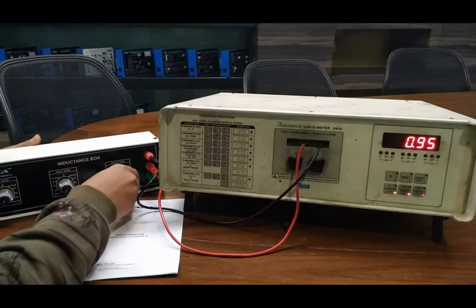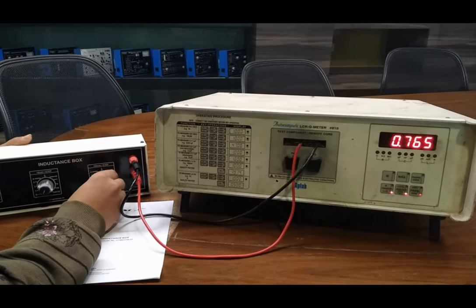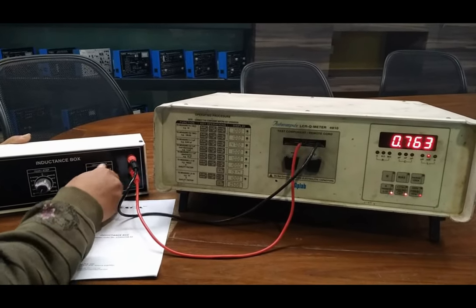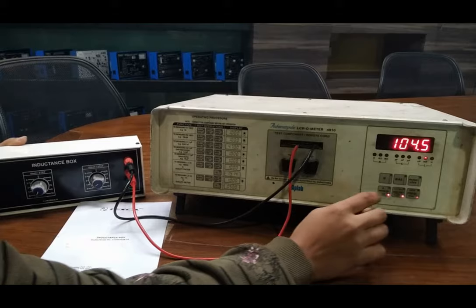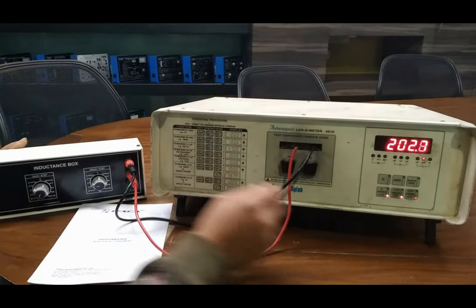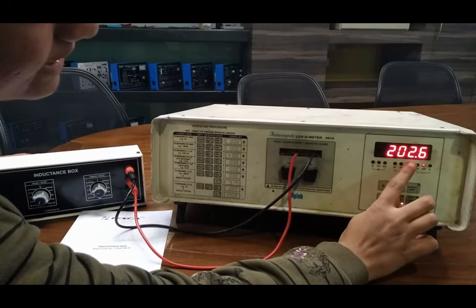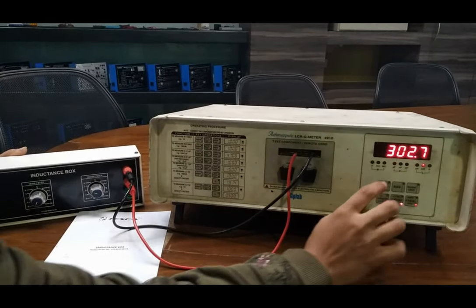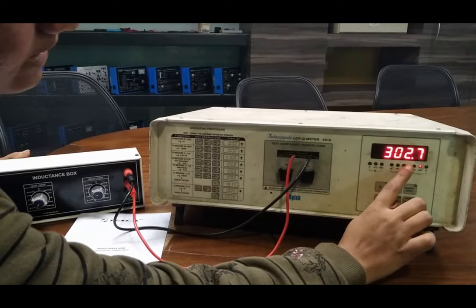Now turning off this knob and turning on the 100 mH value. With 100 mH, it is showing 104.5. With 200 mH, 202.6. 300 mH, 302.7.